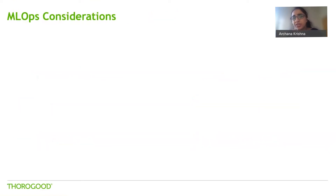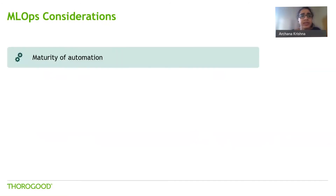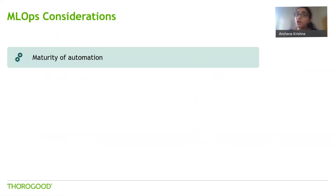As we move on to implementing an MLOps framework, here are some key considerations. The first is maturity of automation. Thinking back to that machine learning lifecycle with about eight stages, there is a decision to be made on which steps you would like to automate. Is it just the model training and validation steps — where the pipeline automatically retrains your model when there is new data — or do you extend it to include deployment as well? The greater the automation, the more mature your processes are and the more your productivity increases.